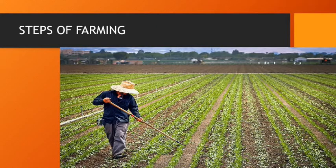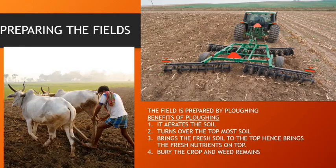Now let's look at the steps of farming. The first step is preparing the fields. In the first picture, you can see basic farming using a plough, and in the second picture, an attachment fitted with a tractor to plough the field. The benefits of ploughing are: it aerates the soil, turns over the topmost soil, brings fresh soil and nutrients to the top, and buries crop and weed remains.